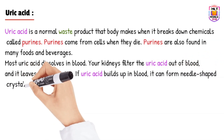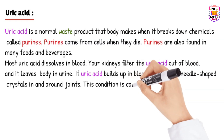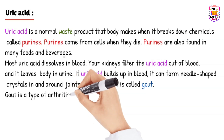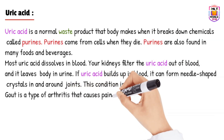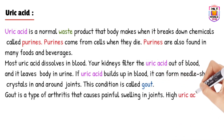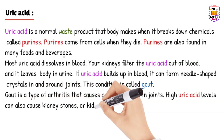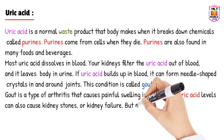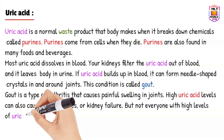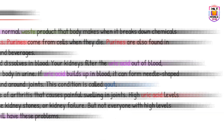Gout is one type of arthritis that causes swelling and pain in the joints. Sometimes a high uric acid level can cause kidney disease, and if not treated, it can lead to kidney failure. However, kidney failure is never fully related to high uric acid alone — there are other reasons as well. Our main focus in this video is to discuss uric acid.